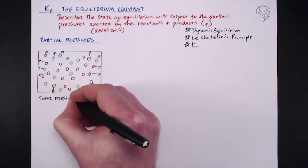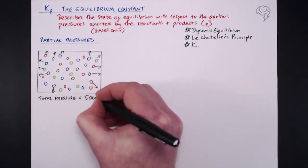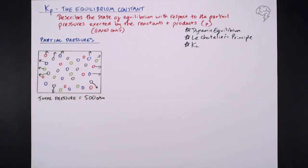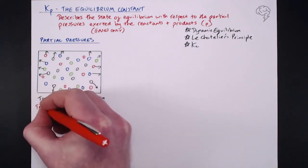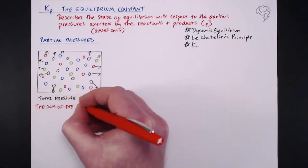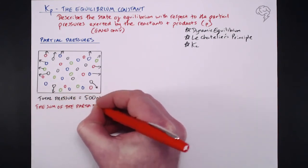But what we do get is a total pressure. So let's say that our total pressure exerted by all of these gases together is 500 atmospheres. What the partial pressures do is give us an idea of how much pressure is exerted by each individual gas.